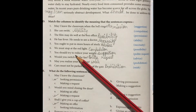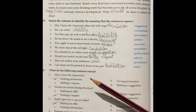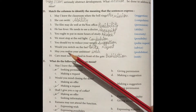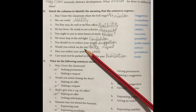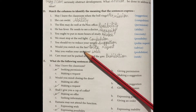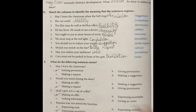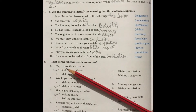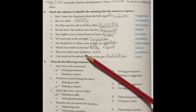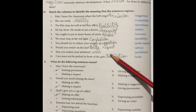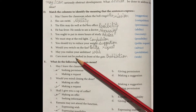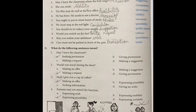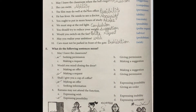'You should try to reduce your weight' — here is a suggestion, कि तुम्हें अपना weight कम करना चाहिए. 'Would you switch on the fan?' — here is a very polite request, क्या तुम fan को switch on कर दोगे. 'May you realize your ambition' — कि भगवान तुम्हारी जितनी भी इच्छाएं हैं वो पूरी करे — here is a wish. 'Cars must not be parked in front of the gate' — here is a prohibition, gate के सामने car को park नहीं करना है.